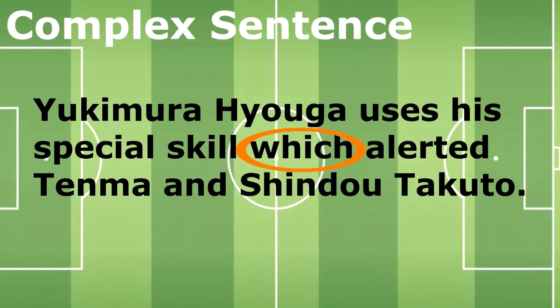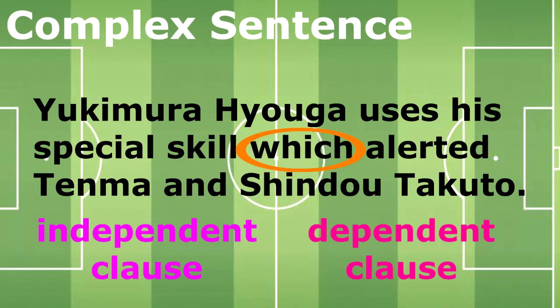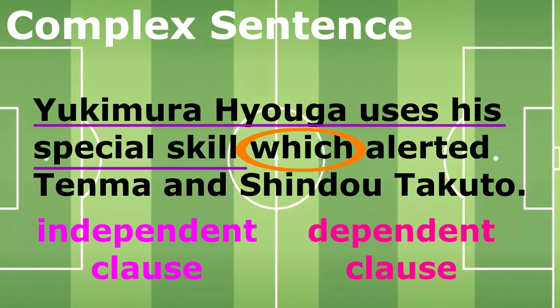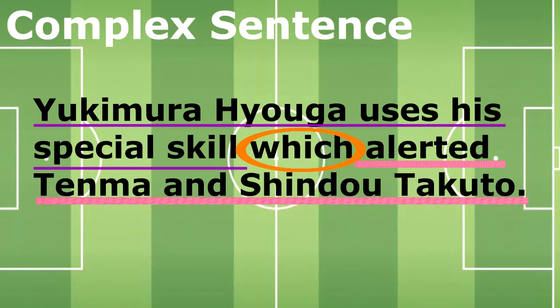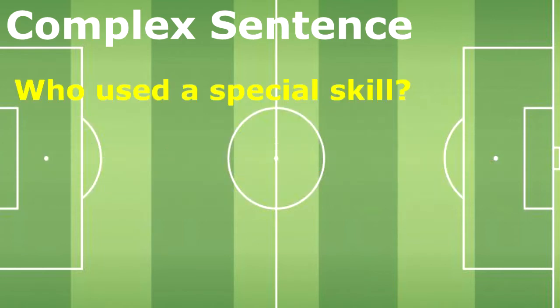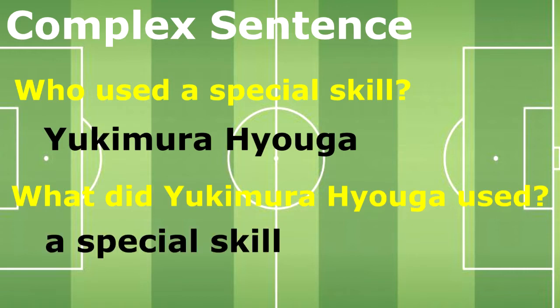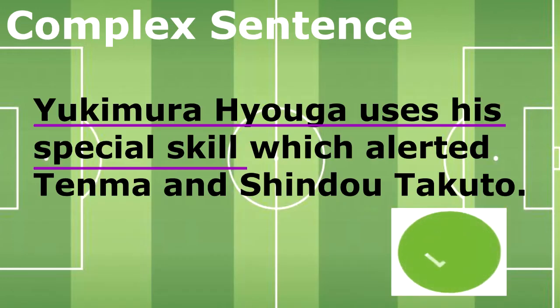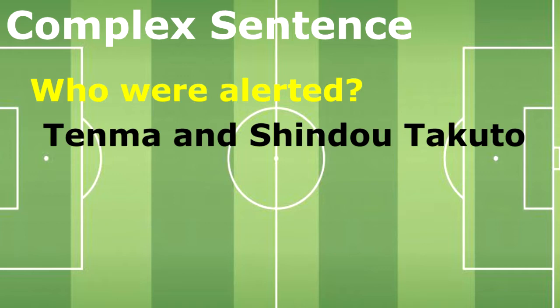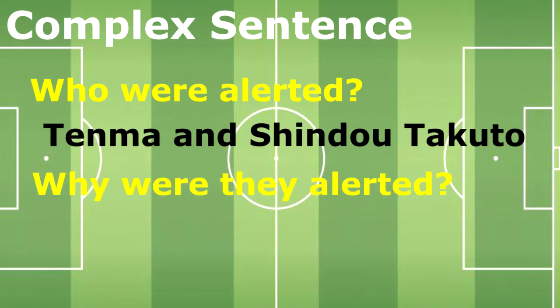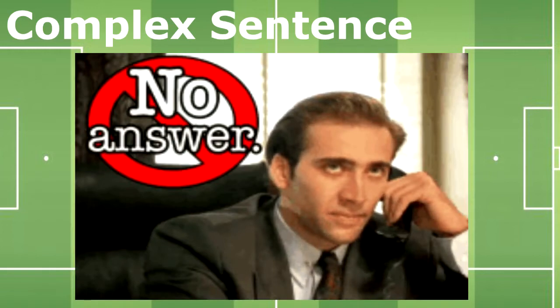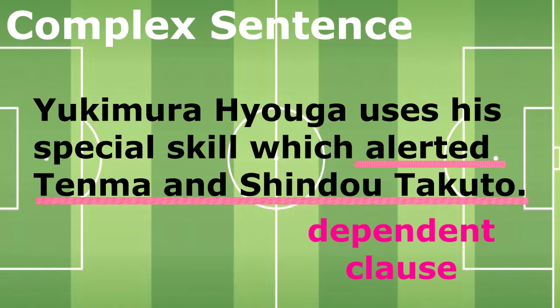As you read the sentence 'Yukimura Yoga uses his special skill which alerts Tenma and Shindo Tsakuto,' you've encountered the relative pronoun 'which.' It is our clue. Take note that sometimes a subordinating conjunction can also be your clue for a complex sentence. Through the word 'which,' we can determine the independent clause and the dependent clause joined in this sentence. 'Yukimura Yoga uses his special skill' is our first clause, and 'alerts Tenma and Shindo Tsakuto' is our second clause. Who used a special skill? Yukimura Yoga. All questions were answered, so the first clause is an independent clause. Who were alert? Tenma and Shindo Tsakuto. Why were they alert? We don't know. Since that clause cannot answer the question on its own, it is therefore a dependent clause.